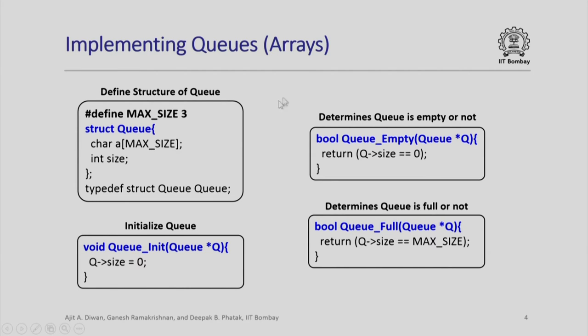Now comes the two status reporting functions: whether the queue is empty or whether the queue is full. Again very simple: I just check the size. If it is 0 it is empty, if it is already equal to max size it is full.